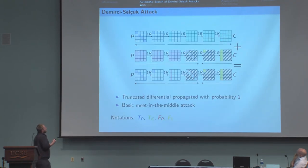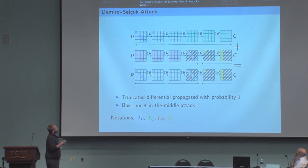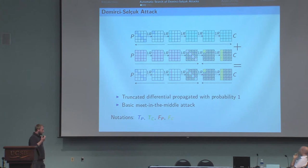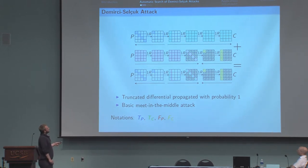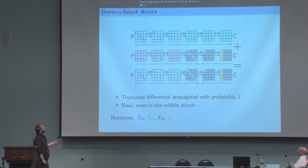First, we noticed that Demirci-Selçuk attack is always constructed from a truncated difference propagated in both ways with probability one, and a basic meet-in-the-middle attack.